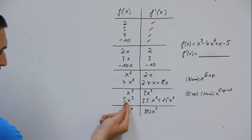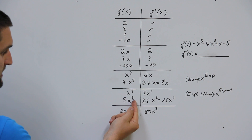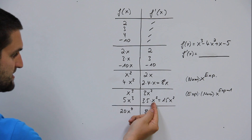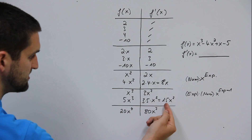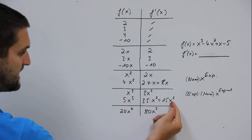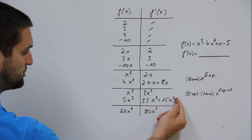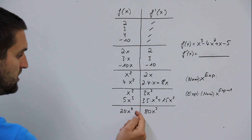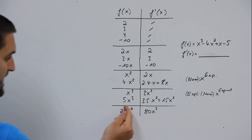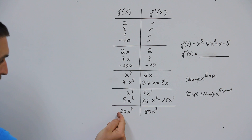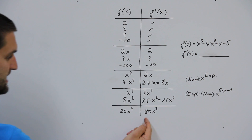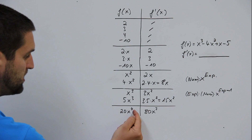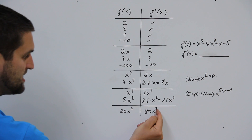x to the power 3 would be 3 times x to the power 2. 5 times x to the power 3: 3 times 5 times x to the power 2 equals 15 times x to the power 2. 20 times x to the power 4: take the exponent times the number in front, 4 times 20 is 80, times x to the power exponent 4 minus 1, which is 3. So the result is 80x to the power 3.